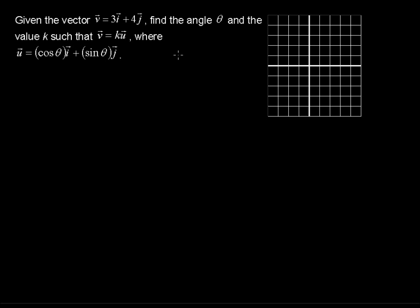Given the vector v equals 3i plus 4j, find the angle theta and the value k such that vector v equals k times the unit vector u, where the unit vector equals cosine of theta times i plus sine of theta times j.